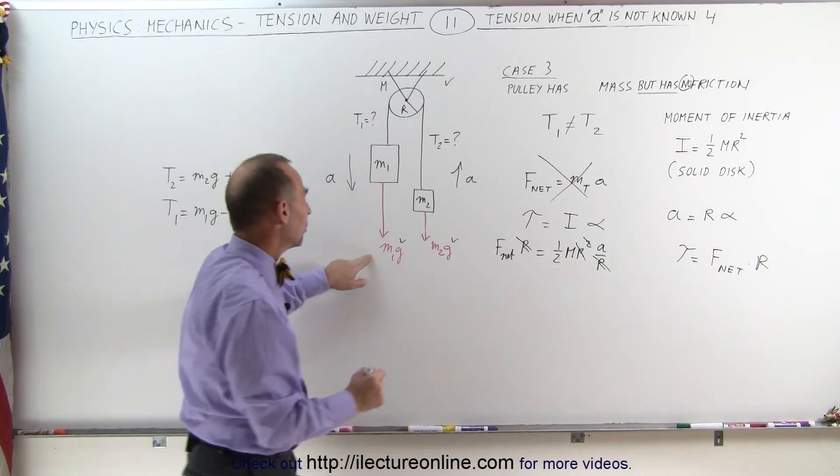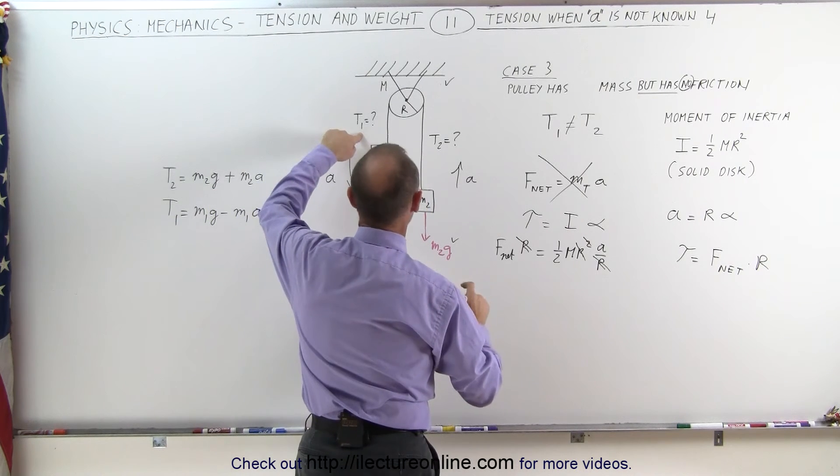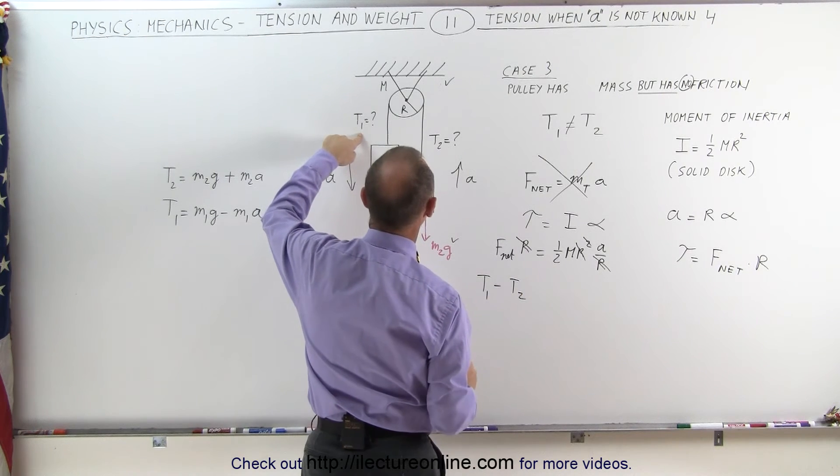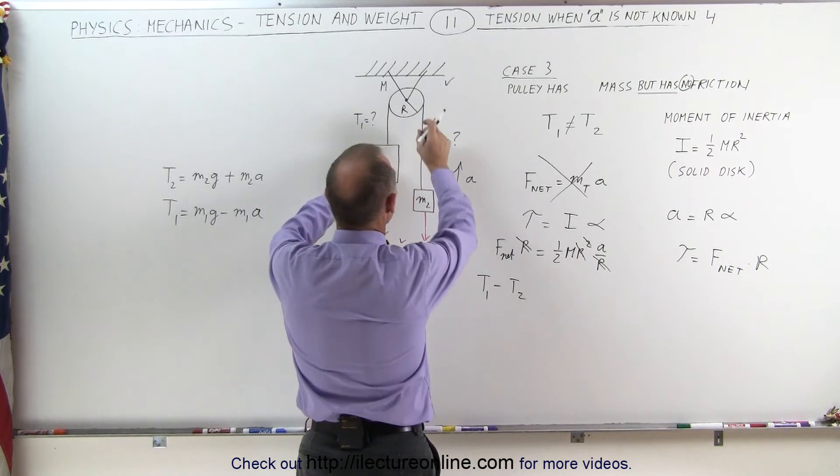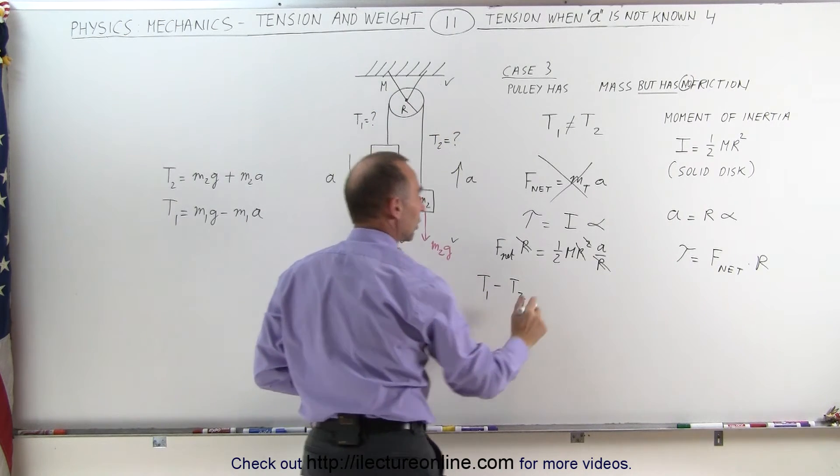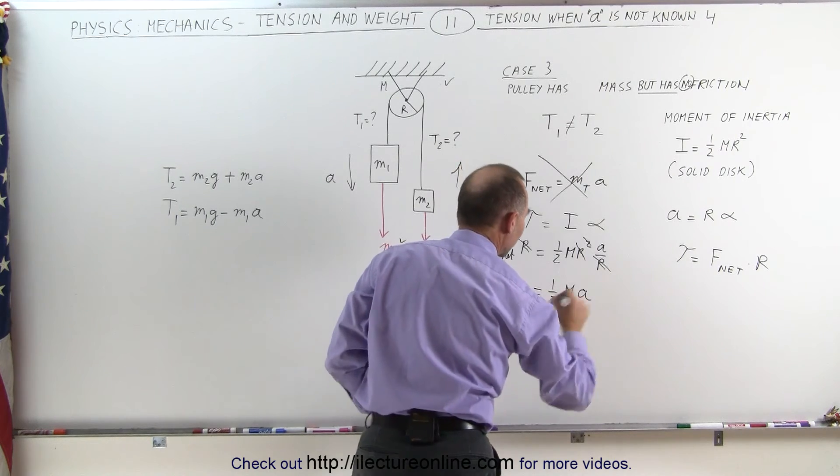And the net force here will be equal to the tension over here which is tension 1 minus tension 2. So tension 1 minus tension 2 that will be the net force acting on the pulley that caused the torque equals one-half times the mass times the acceleration A.